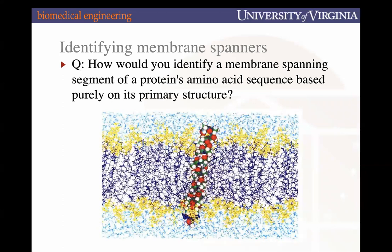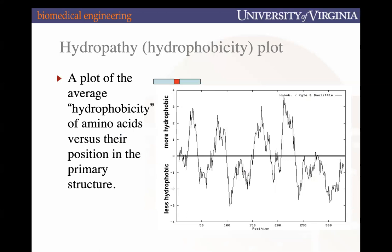Can you identify a membrane-spanning protein simply by its amino acid sequence? Yes — we use what's called a hydropathy plot. It looks at each amino acid one at a time with a sliding window; the adjacent amino acids are also considered. It determines the degree of hydrophobicity or hydrophilicity. Above zero on the y-axis are amino acids that are more hydrophobic; below zero are more hydrophilic.